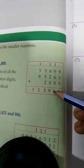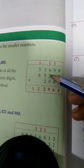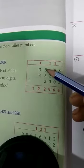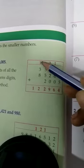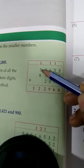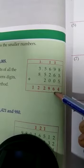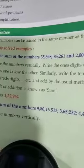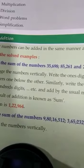So 9 plus 1 is 10, 10 plus 6 is 16 — write 6 here, carry 1 to the next one. 1 plus 6 is 7, 8, 9 — write 9. Then 5 plus 5 plus 2 is 12 — write 2 here, carry 1. 1 plus 3 is 4, 4 plus 8 is 12. So you will get 1, 2, 2, 9, 6, 4 as the sum. Sum means when you add 2 or 3 numbers, the final answer you get is known as the sum.